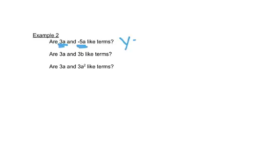Let's talk about like terms. Like terms mean that the letters have to match exactly. In this first part we have 3a and negative 5a. The numbers in front are the coefficients — the 3 and the negative 5 — and they can be different. We have an a in the first one and an a in the second one, so these are like terms.